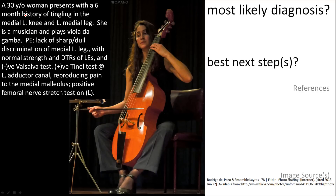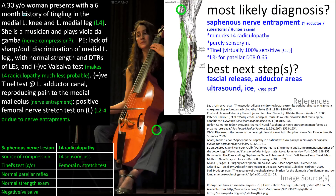The second case is a 30-year-old woman with a six-month history of tingling in the medial left knee and left medial leg. She's a musician who plays viola da gamba. On physical exam, there's loss of sharp-dull discrimination of the medial left leg with normal strength and reflexes of the lower extremities, a negative Valsalva test, a positive Tinel's test at the left adductor canal reproducing pain to the medial malleolus, and a positive femoral nerve stretch test on the left. Based on the pain pattern, we're suspecting two things: L4 radiculopathy or saphenous nerve involvement — the distribution is virtually identical.